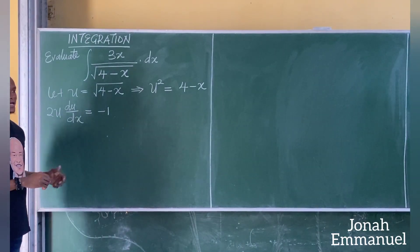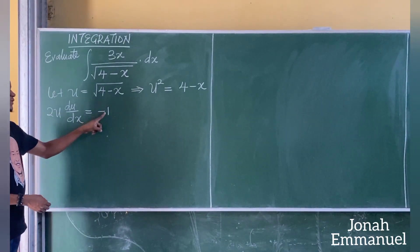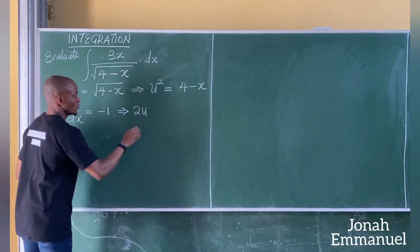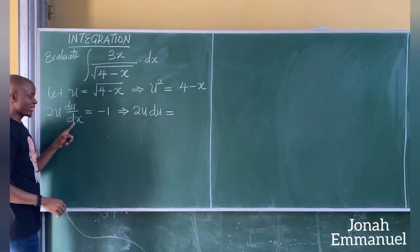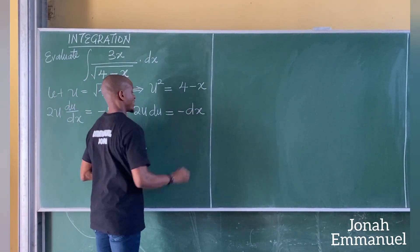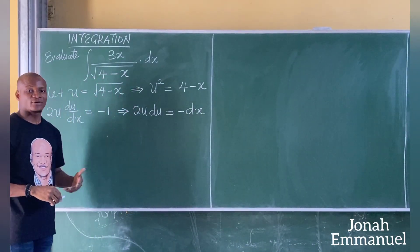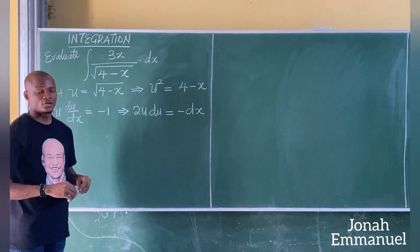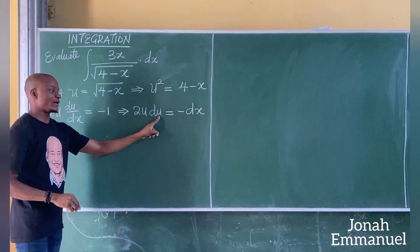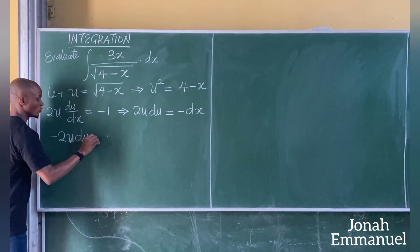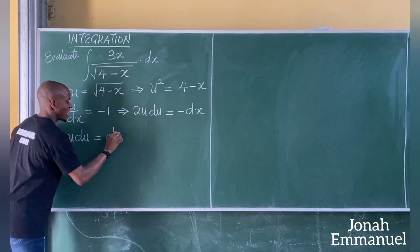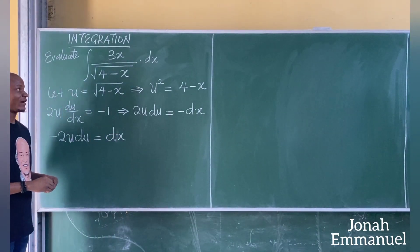For here, I'll make dx the subject of the formula. I have 2u du equals minus 1 times dx, which gives minus dx. I'm looking for the value of dx, not minus dx. So I'll multiply both sides by minus 1: it becomes minus 2u du equals dx. So hence I have the value of dx.